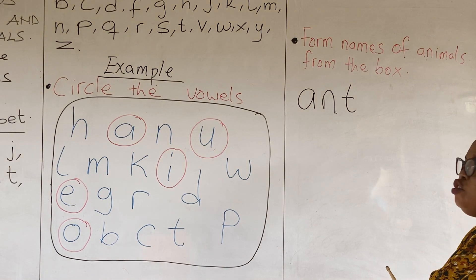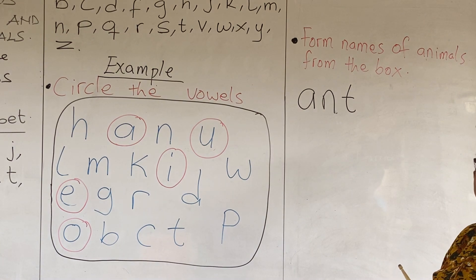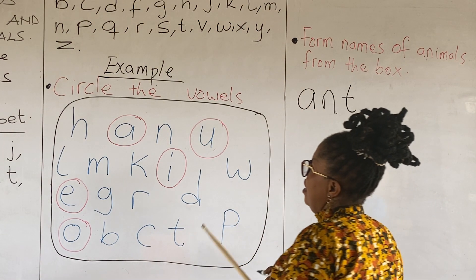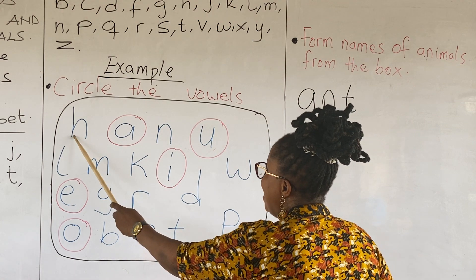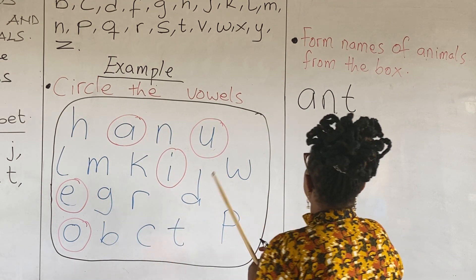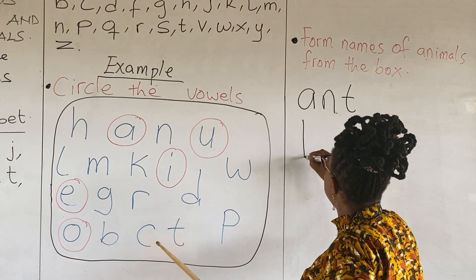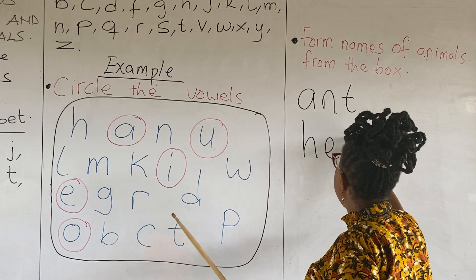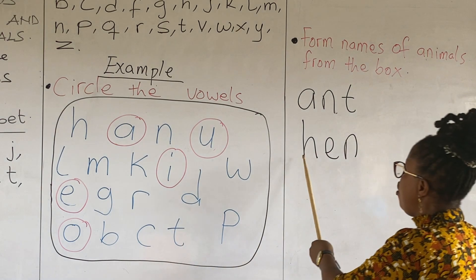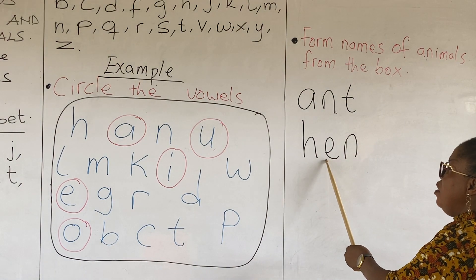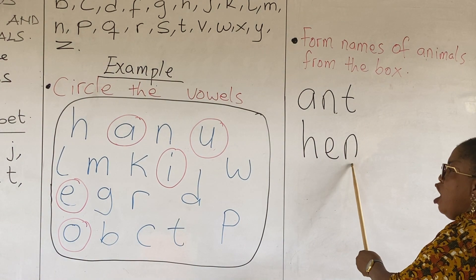Let's look for another name of an animal. H, E, N. That is hen. We have H, E, N — hen. A consonant, a vowel, and a consonant.